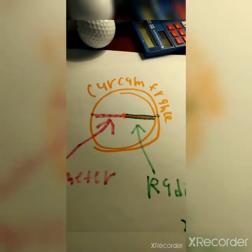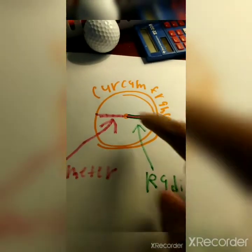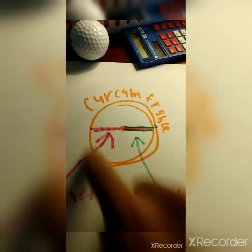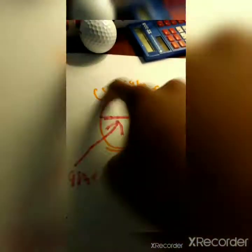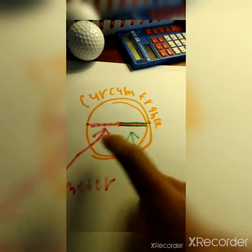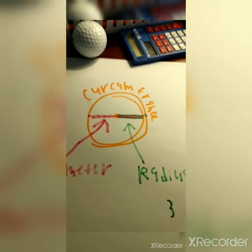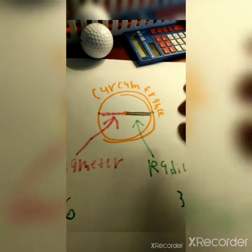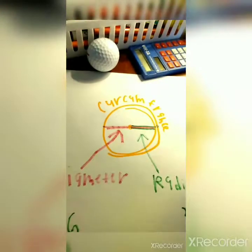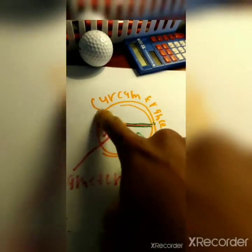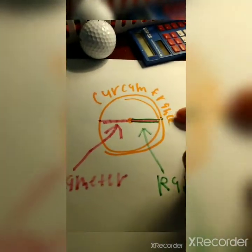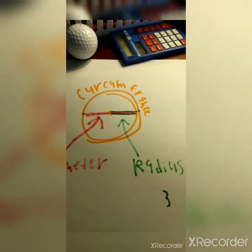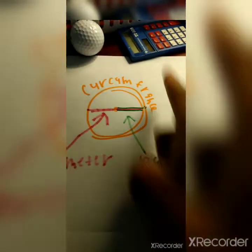So you saw how the Beyblade had red lighting all over it? The circumference measures the outside of the circle and its perimeter. The Beyblade had red lighting around it to represent the circumference — that's the part being hit by the other Beyblade that's bouncing off.